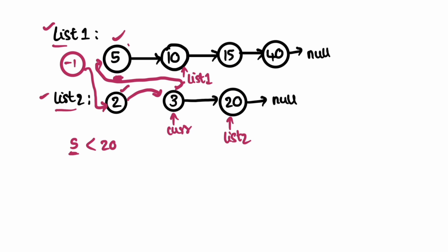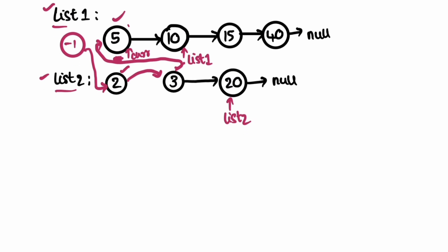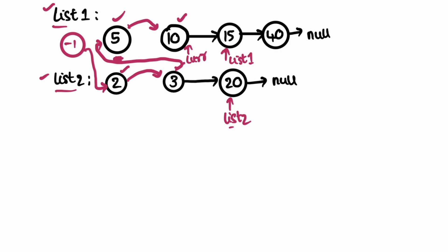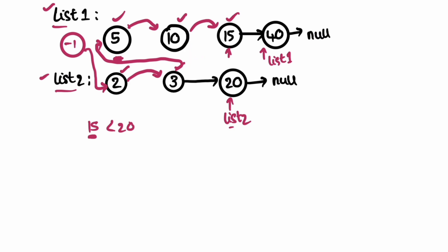Current also moves forward. Now we compare list one's element, which is ten, and list two's element, which is twenty. Ten is the minimum, so current points to ten and list one moves forward. Current moves to the last processed element. Next, we compare list one's fifteen with list two's twenty — fifteen is the minimum, so current points to fifteen, list one moves forward, and current updates to fifteen.